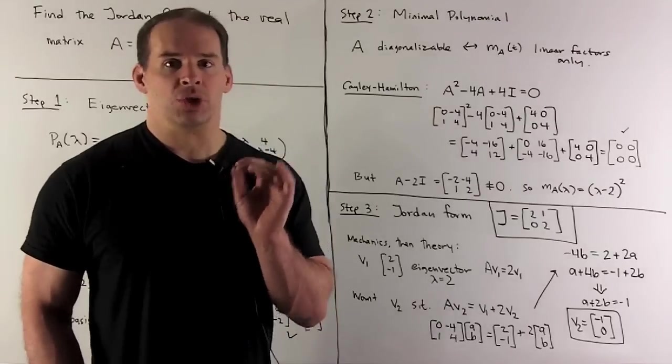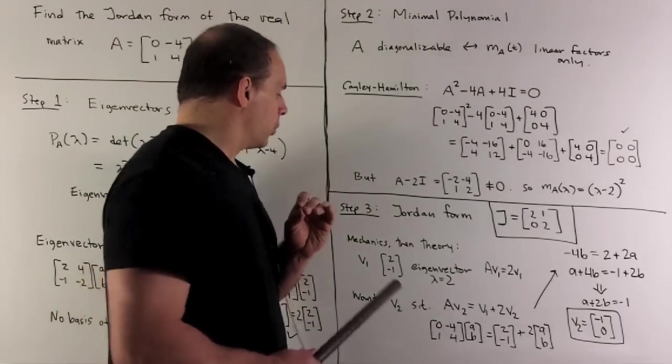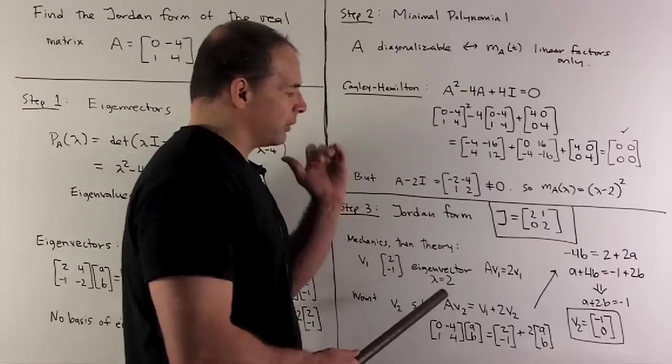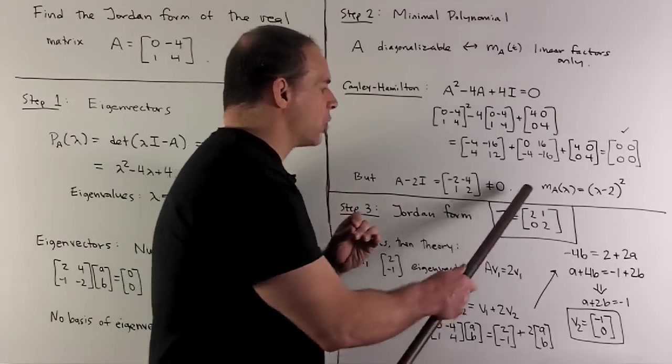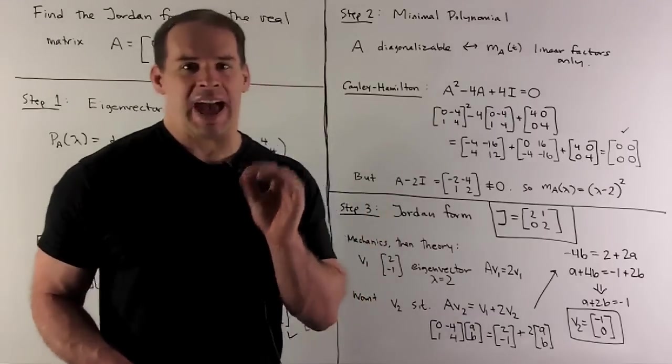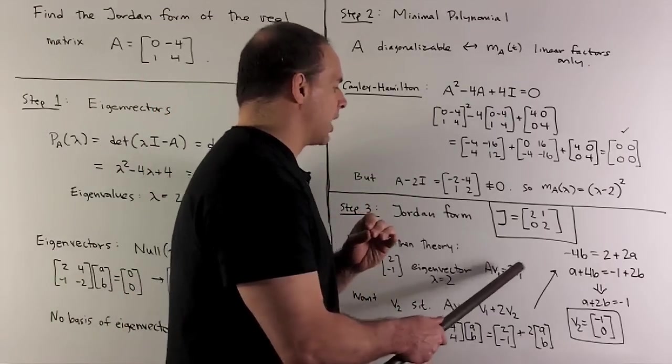So, let's see what the Jordan form actually says. Now, for my first basis vector, we're using the eigenvector that we found before, V1, which is [2, -1]. So, the way I read the first column, that's just the eigenvector equation. A times V1 is equal to 2 times V1.